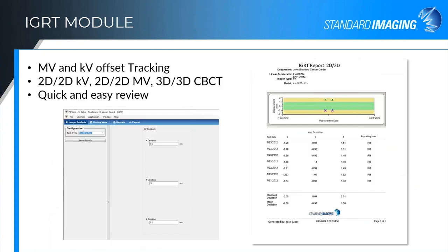The IGRT module allows you to check daily X, Y, and Z deviations using something like the Mimi phantom. You enter those deviations daily, it performs 2D and 3D matching, and you can trend and report on those results — building a trend line for daily positioning checks for KV and MV 2D matching and cone beam 3D matching.